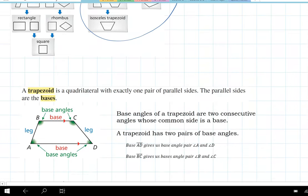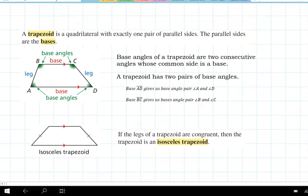So we'll start with the trapezoid, and a trapezoid is a quadrilateral with exactly one pair of parallel sides, and those parallel sides we call the bases. Now I will tell you that some books have a slightly different definition of a trapezoid, but this is the one that we'll be using, which is exactly one pair of parallel sides, which means that a parallelogram, since it has two pairs of parallel sides, would not be a trapezoid. Trapezoids only have one set of parallel sides.